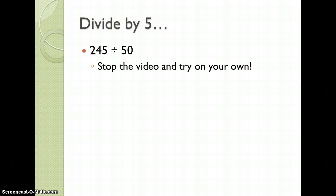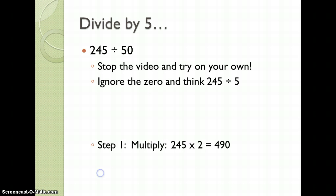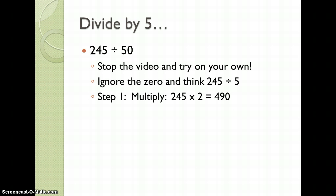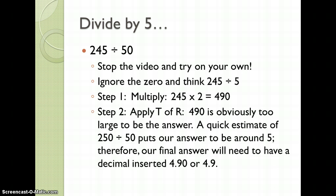245 divided by 5 — please stop the video and try it on your own. We're going to multiply 245 times 2, which is 490. 490 is way too large to be our answer. A quick estimate of 250 divided by 50 puts our answer to be around 5. Therefore, our final answer will need to have a decimal inserted to give us 4.90, or 4.9.